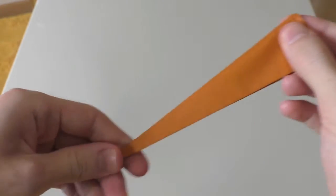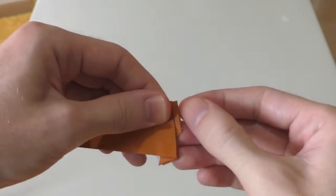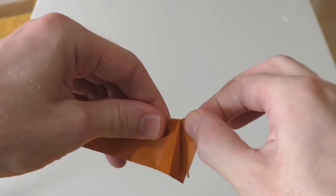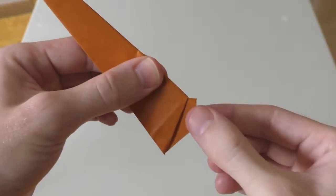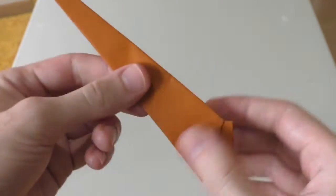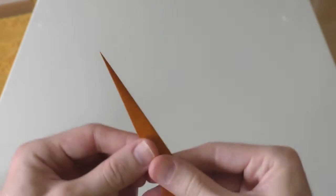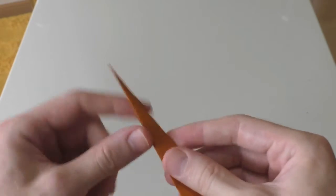And then you want to hold this and pull it out so you get this kind of shape. Now this is where it will connect to the body, so it's important to get this groove nicely done. Now the tricky part. The head. How do we turn a spike into a head?